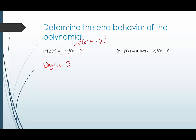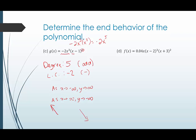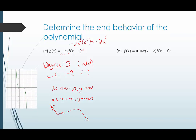This is a degree five polynomial with a leading coefficient of negative two. Degree five is odd, and the leading coefficient is negative. So as x gets smaller toward negative infinity, y gets bigger toward positive infinity. As x gets bigger toward positive infinity, y gets smaller toward negative infinity. The graph goes up to the left and down to the right, which we can confirm from the graph of g of x.